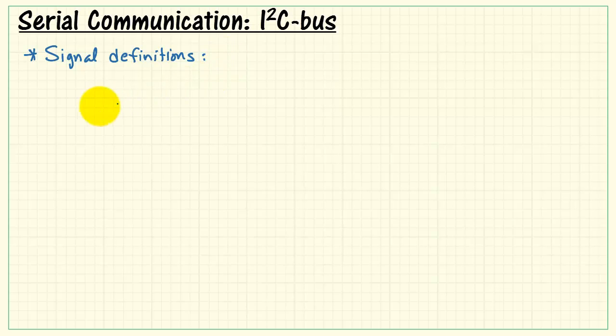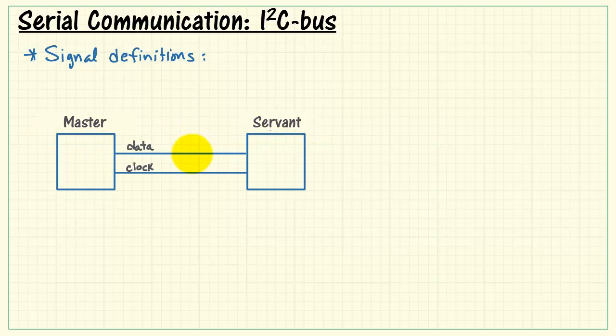Now let's start taking a look at the signal definitions and terminology. We have one device designated as the master and a second designated as a servant.